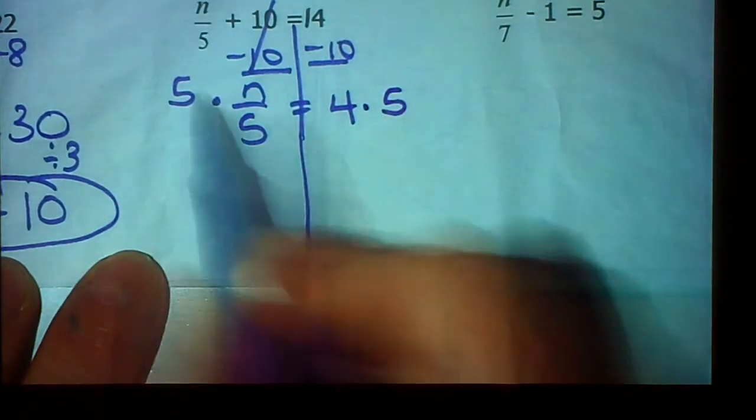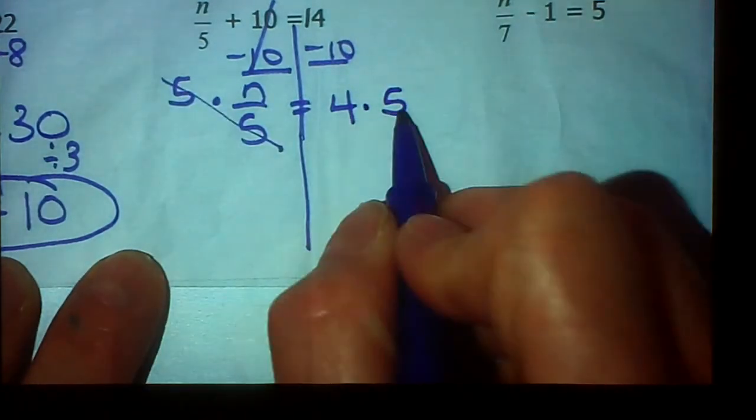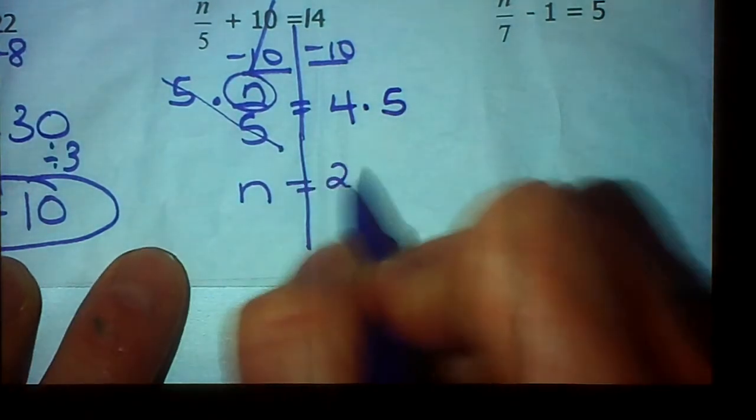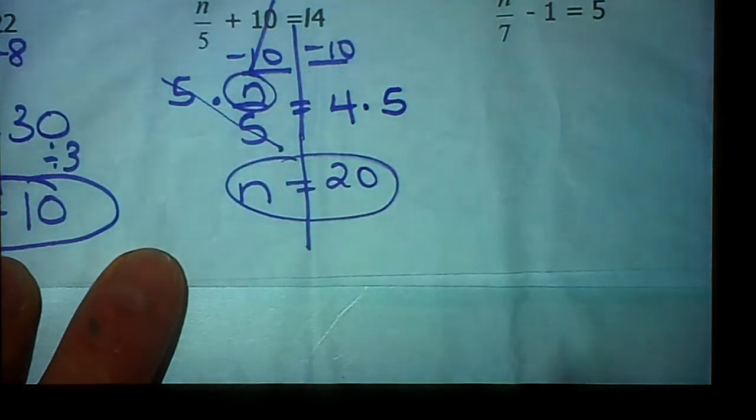n is being divided by 5. So to undo, divide by 5, we're going to multiply by 5. And whatever I do over here, I have to do over here. So n is the only thing left. 4 times 5 is 20. And n is alone, so we're done.